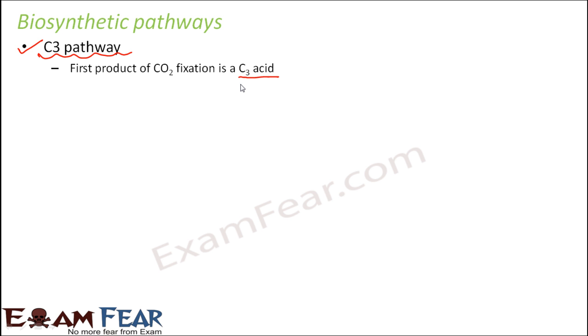So the first stable product which is formed as a result of carbon dioxide fixation, carbon dioxide fixation means you have some starting material or a reactant. Carbon dioxide from atmosphere gets fixed or it gets added to that particular material and then it forms a first stable product. So that first stable product of carbon dioxide fixation is a C3 acid, that is a three carbon organic acid. So that is why this is known as C3 pathway.